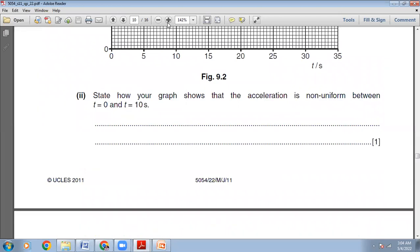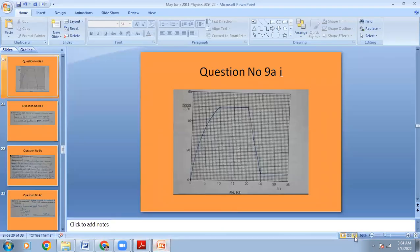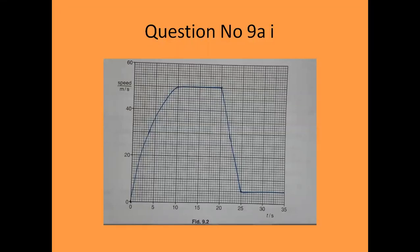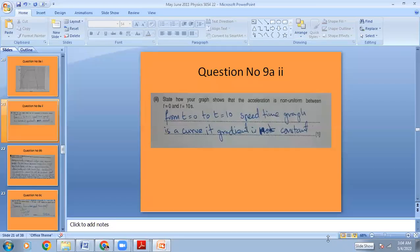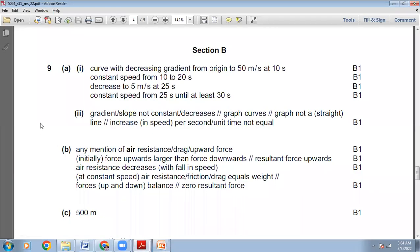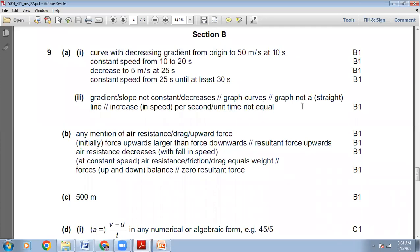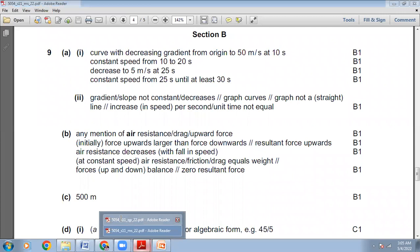Next question: state how your graph shows that the acceleration is non-uniform between T=0 and T=10 seconds. We have drawn that graph in the shape of a curve. This curve shows that the acceleration is non-uniform because the gradient is changing. The gradient of the speed-time graph equals the acceleration, and from 0 to 10 seconds the gradient is gradually changing — so acceleration is changing, therefore acceleration is non-uniform. The speed-time graph is a curve; its gradient is not constant but gradually changing. The marking scheme confirms: gradient or slope not constant, it's a curve not a straight line.